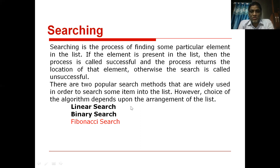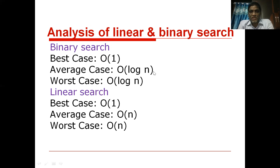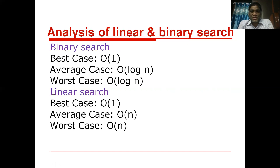We have seen two algorithms in our previous class: linear search and binary search. Linear search is a sequential search which searches for the key by comparing each element starting from the leftmost element moving towards the rightmost element. If the element is found it returns the index, otherwise it returns minus one. The time complexity of linear search in best case is O(1), and in other cases it is O(n).